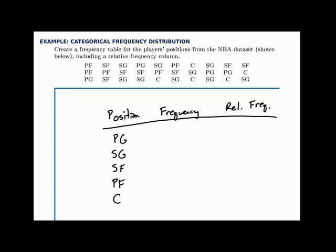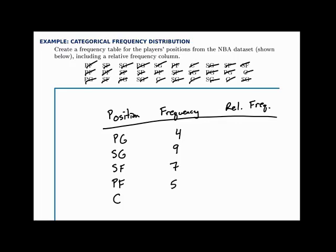Going through and counting: point guards — 1, 2, 3, 4, so the frequency is 4. Shooting guards — 1 through 9, so frequency is 9. Small forwards — 7. Power forwards — 5. Centers — 5. Adding up those frequencies should give the total of 30, which you can verify. For the relative frequency, we divide each frequency by 30: point guards are 4/30, which is approximately 0.133 or 13.3%; shooting guards are 9/30, which is 30%; small forwards 7/30 is 23.3%; and power forwards and centers are each 5/30, or about 16.7%.